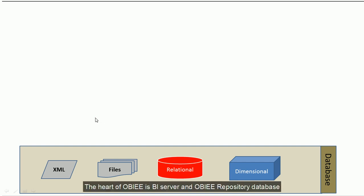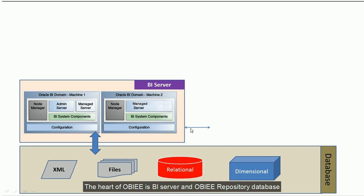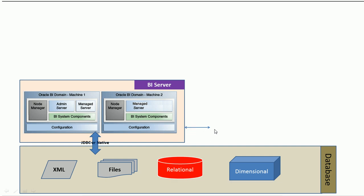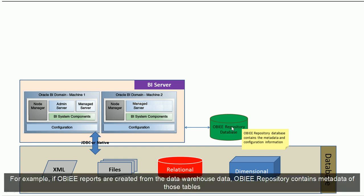The heart of OBIEE architecture is the BI server and the OBIEE repository. The OBIEE repository is where OBIEE stores the metadata of the source database tables. For example, if OBIEE reports are created out of data warehouse data, then the OBIEE repository contains the metadata of the data warehouse tables.